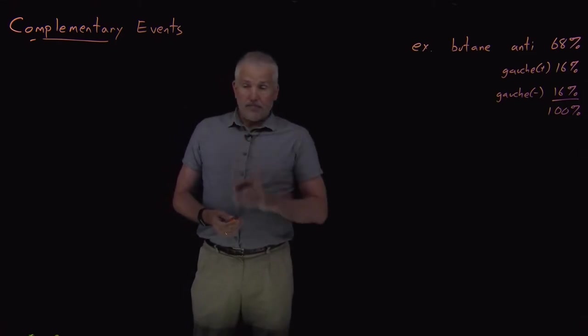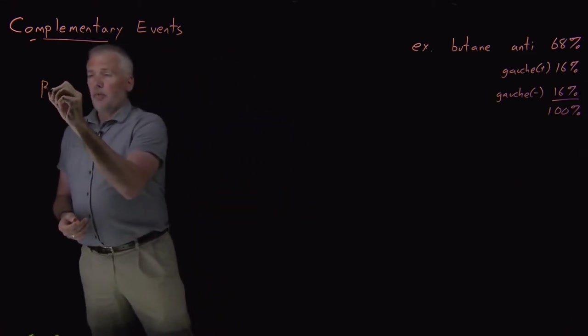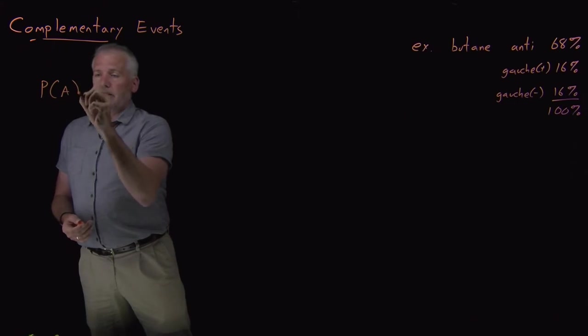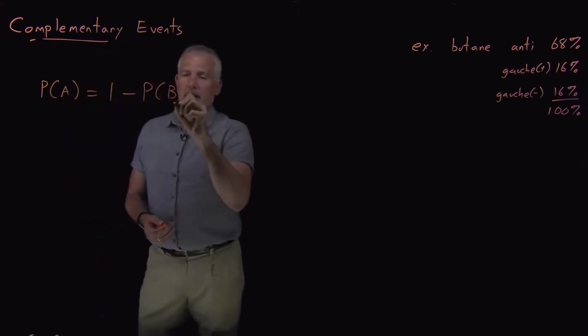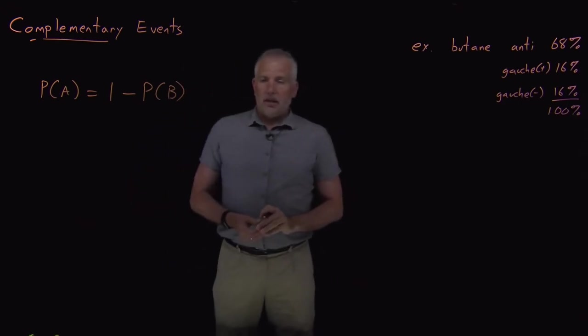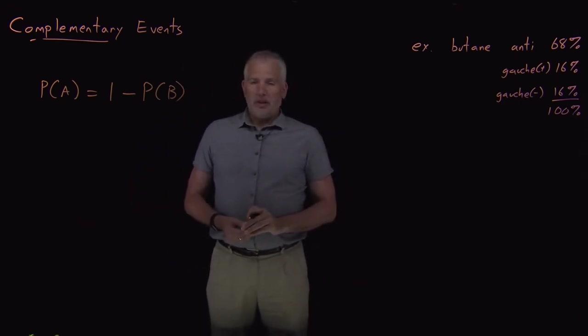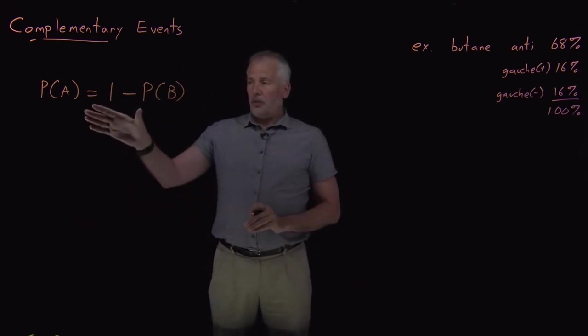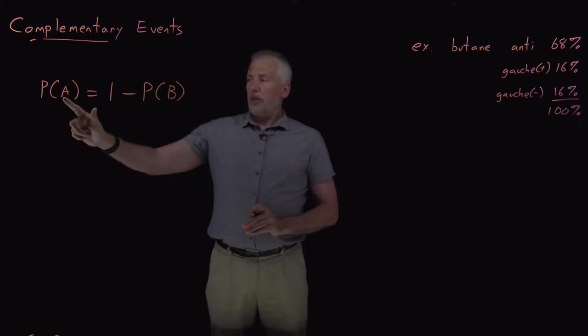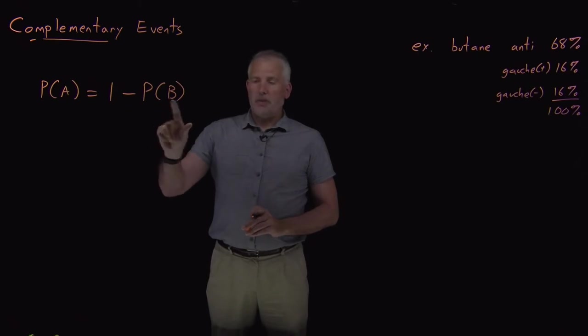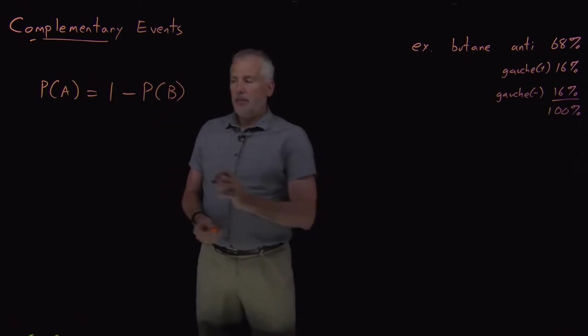So, the probability rule, if we have two complementary events, and again, writing this as an equation is just putting something that's fairly clear into an equation that might make it seem more difficult at first, but if I want to know the probability of one event A, it's just one minus the probability of the other event if A and B are complementary.